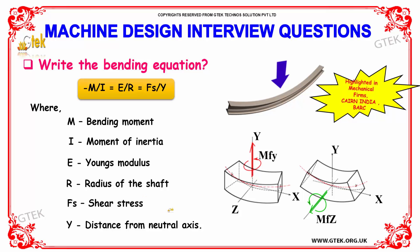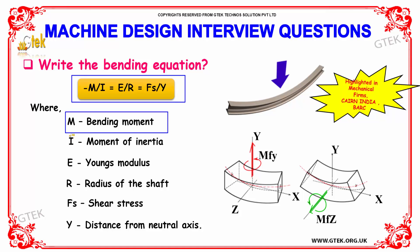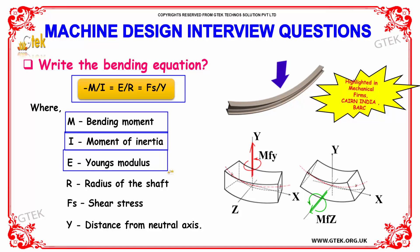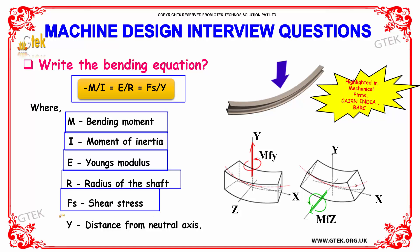Write the bending equation. The bending equation is: M/I = E/R = σ/Y, where M is the bending moment, I is the moment of inertia, E is Young's modulus, R is the radius of the shaft, σ is the bending stress, and Y is the distance from the neutral axis.